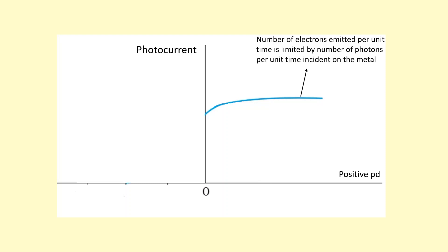And that's because the number of electrons being emitted per unit time is being limited by the brightness of the light. Basically, the number of photons being emitted per unit time.